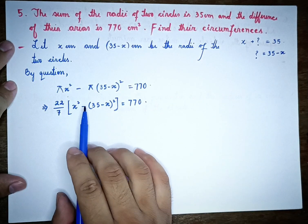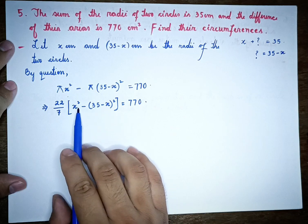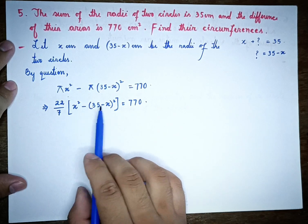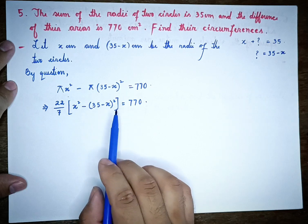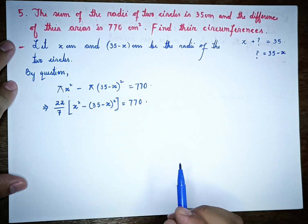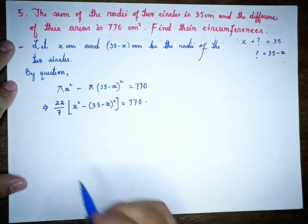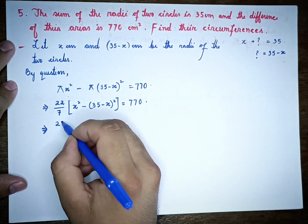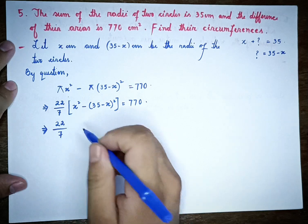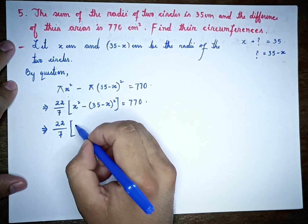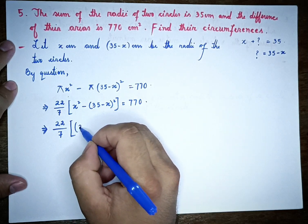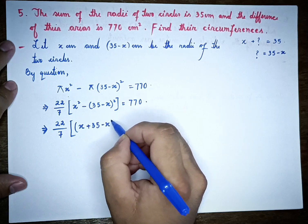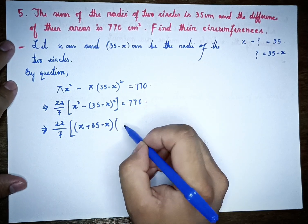Now applying the identity a squared minus b squared equals (a plus b)(a minus b), this becomes 22 by 7 times (x plus 35 minus x) times (x minus 35 plus x) equals 770.